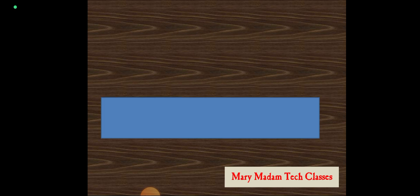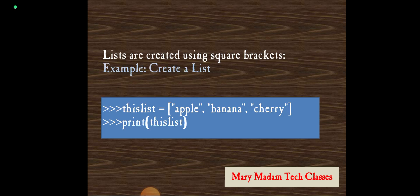Lists are created or represented using square brackets. If you see in this example, this list is a variable equals to items or elements apple, banana, cherry. These are written in double quotations because they are string data types. The lists are written in square brackets and should be represented in square brackets.